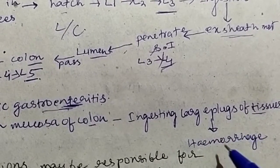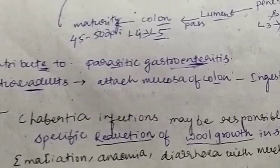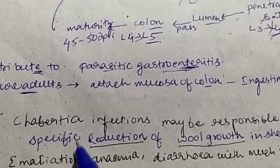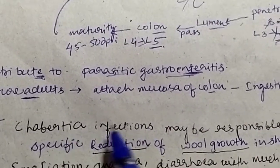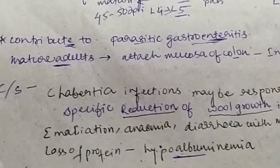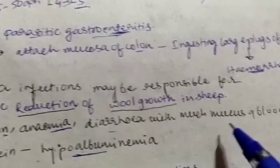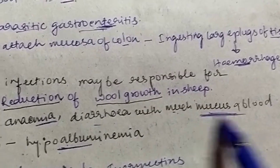Therefore, it will eventually lead to hemorrhagic condition in the host. And it is suspected that because of Chabersia infection, in case of sheep, there is the reduction of wool growth. And some other clinical signs such as emaciation, anemia because of severe hemorrhage, and diarrhea with much mucus and blood.